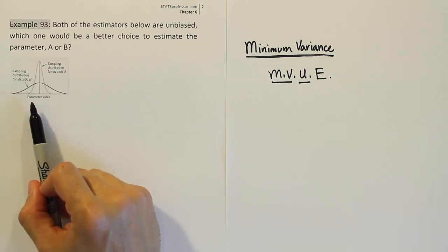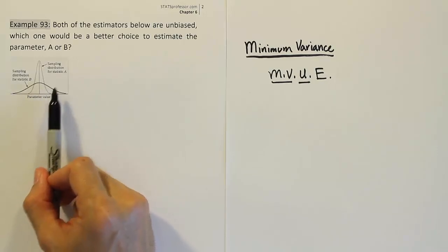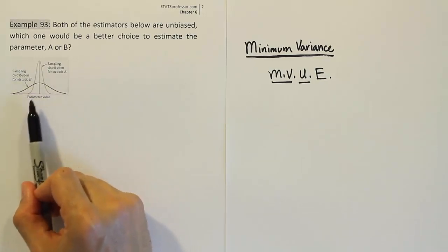Which means that when it misses its mark, it doesn't miss it by much. On average, it's correct. That's what unbiased means. But it also means here that even when it doesn't hit its target, it's not too far away because most of the occurrences of this estimator are right around the parameter.